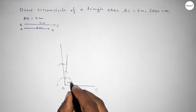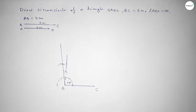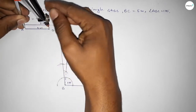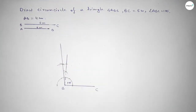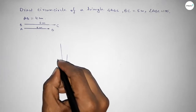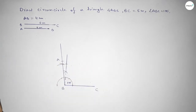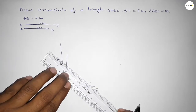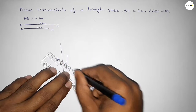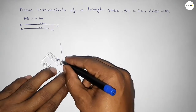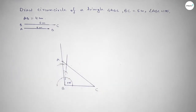Now taking the length 4 centimeters using the compass and placing it at point B, cutting to mark point A. Then joining AC to complete triangle ABC.